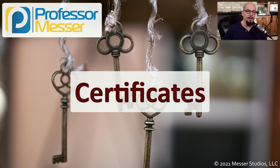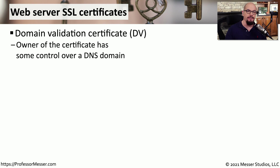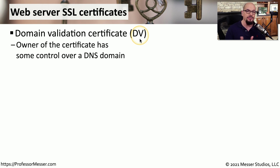In previous videos, we talked a lot about what's inside of a certificate, but we haven't talked about when you would use these. In this video, we'll look at the many uses for these digital certificates. One of the most visible uses is a certificate that allows you to encrypt communication to a web server. This is usually indicated by a lock in the address bar of your browser. We refer to these as domain validation certificates, or DV certificates. This means that the owner of this certificate has some control over the domain you're connecting to, providing the trust that you really are connecting to the legitimate form of that particular website.